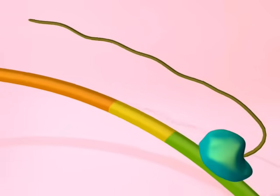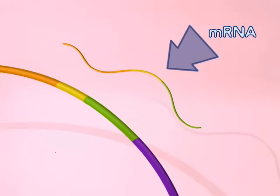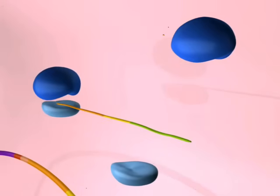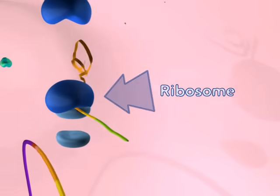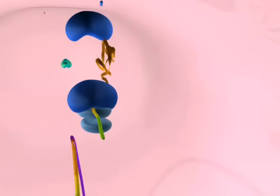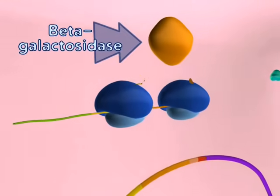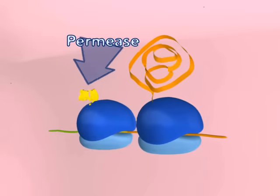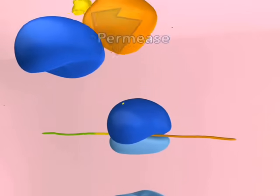Here we show two of the three lac operon genes being transcribed into mRNA. Ribosomes then bind to the mRNA and the two proteins are translated. The first protein is beta-galactosidase, which breaks down lactose into two simple sugars. The second protein is permease, a membrane-bound protein.